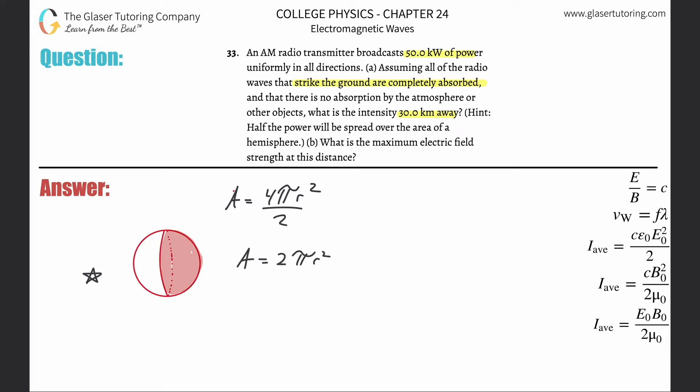If we put this in the middle of the star from the source, they're telling us the position away from that point is going to be 30 kilometers. What's the power? They told us the power from the source is 50 kilowatts, but they said half the power will be spread over an area of a hemisphere, so only half the power - meaning 25 kilowatts, or 25,000 watts.